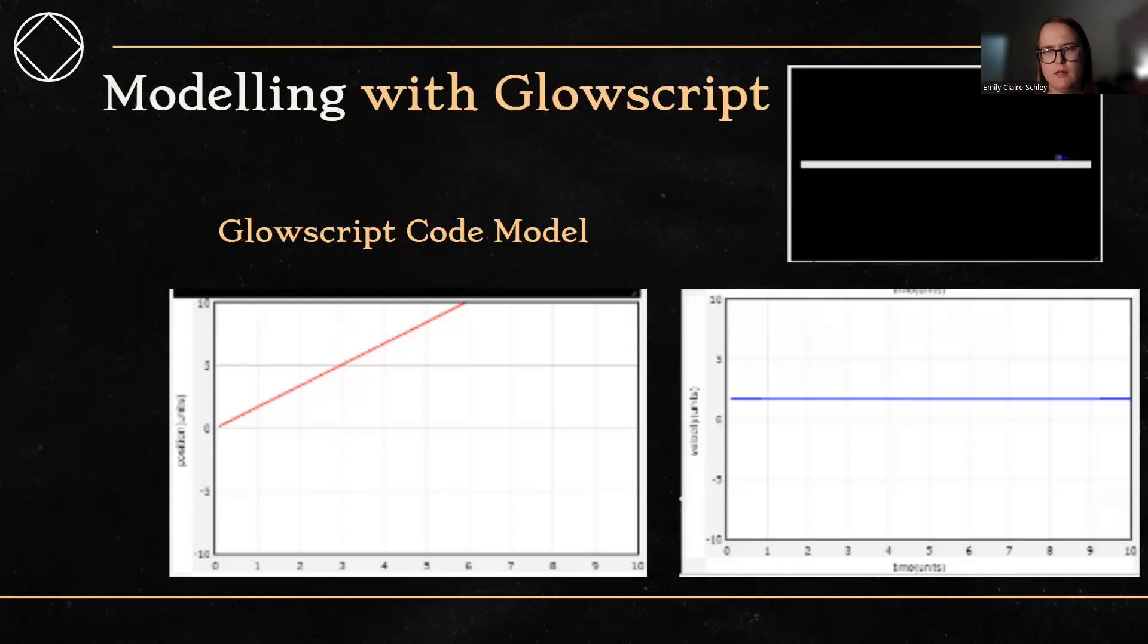And then what I did for this is I actually modeled with the code in GlowScript because it's just easier to see it move when you're not looking at 20 of them at once. And I was happy to see that for the velocity graph that I generated in GlowScript, I don't know why it's so pixely, that it was what I said it was, generally positive or around zero and consistent the entire time. There was no acceleration or deceleration.